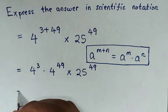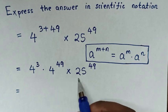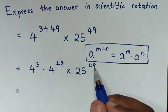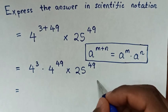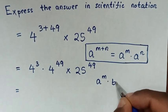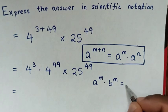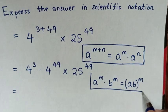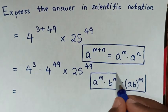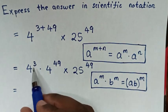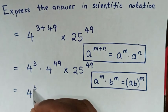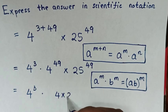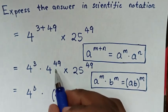Then it will be equal to — as from here is multiplication of exponents with different bases but same power. So we'll apply the exponential rule that a power m times b power m is equal to (a times b) bracket common power m. So it will be 4 power 3, then times (4 times 25) bracket common power 49.